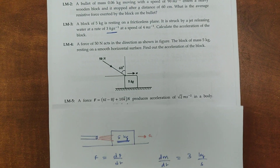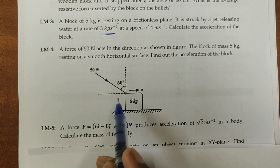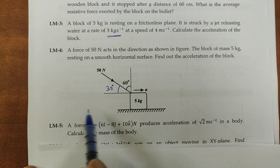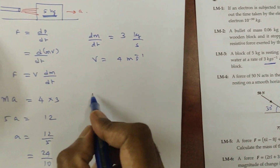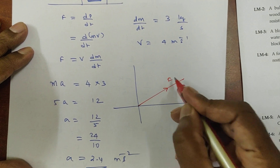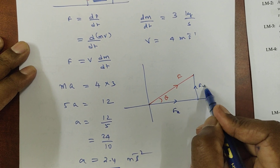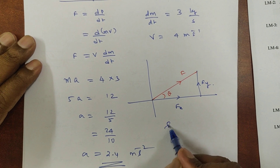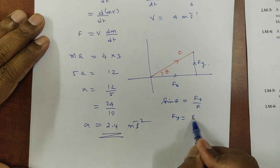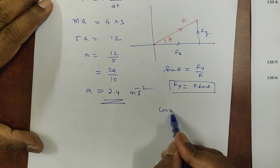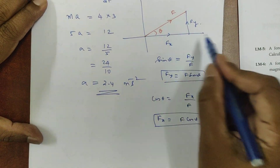Now problem number 4: A force of 50 newtons acts at an angle of 60 degrees. The force has two components — one horizontal and one vertical — resolved using trigonometry. sin θ gives the vertical component Fy = F sin θ, and cos θ gives the horizontal component Fx = F cos θ.